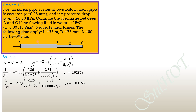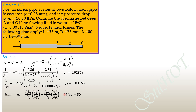Substituting into the total head loss equation: pressure drop over 9.81 equals HF1 plus HF2, where HF equals F·L/D times velocity head. Using continuity, pi/4 times 75² times V1 equals pi/4 times 50² times V2, so V2 equals 2.25 V1.